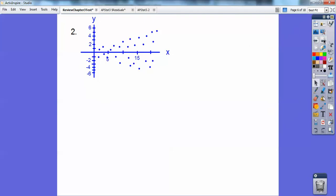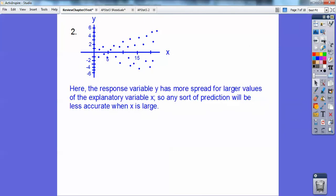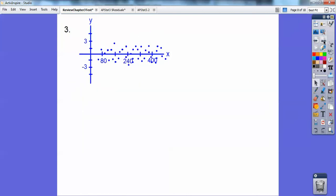Here's number 2. What kind of, would this give us anything? So this one, the response variable y over here, here's my response variable right here. It has more of a spread as x gets larger. It starts spreading out more. So any kind of least square regression line would become less accurate as x got larger and larger. It might be okay in the beginning, but towards the end as x gets larger, least square regression line would be not very good.